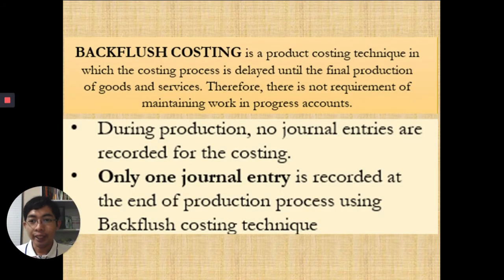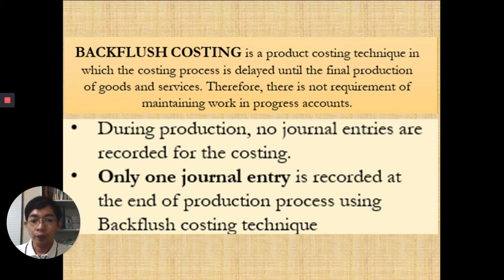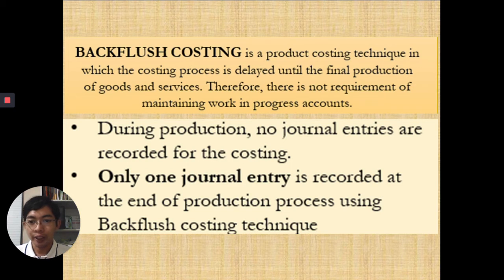The next topic is backflush costing. It is a product costing technique in which the costing process is delayed until the final production of goods and services. Therefore, there is no requirement of maintaining a work-in-progress account. Instead of separate raw materials and WIP accounts, you use a combined 'raw and in process' account, because you will put them in your books once production is done.